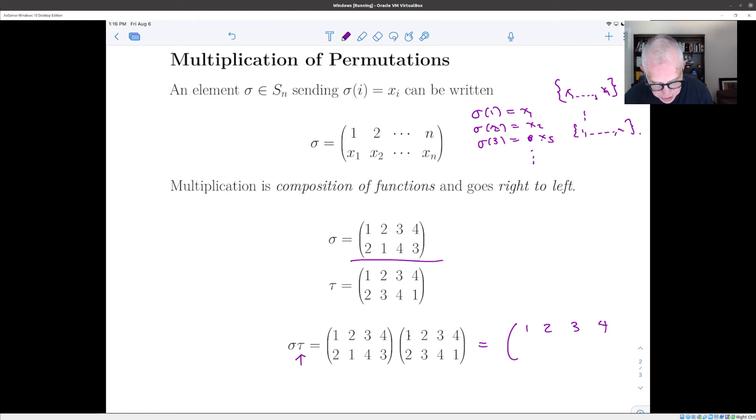So tau of one is two, sigma of two is one, so in the product, one goes to one. Tau of two is three, sigma of three is four, so two goes to four. Tau of three is four, sigma of four is three, so three gets left alone. And tau of four is one, and sigma of one is two, so four goes to two.